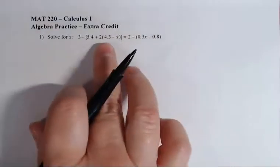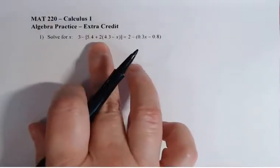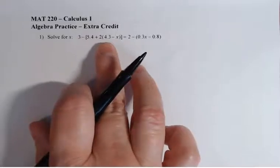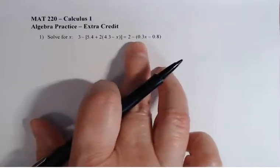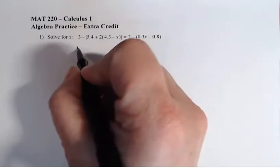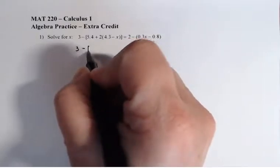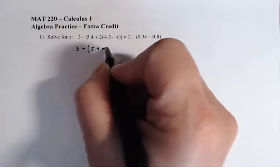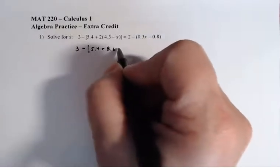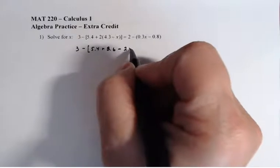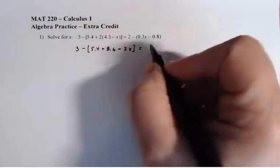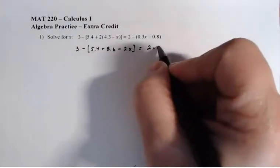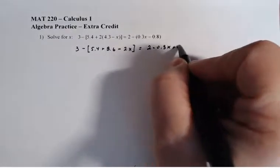The first thing I'm going to do here is start from the inside and work my way out. So I'm going to distribute this two here first and I'm going to distribute this negative here. So I get 3 - 5.4 + 8.6 - 2x is equal to 2 - 0.3x + 0.8.